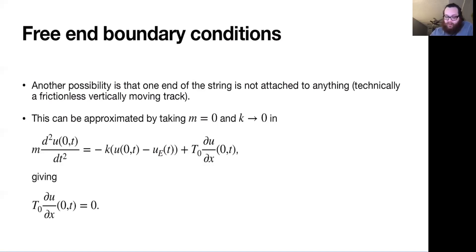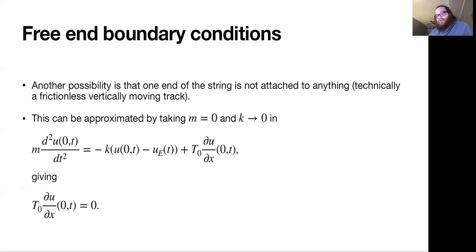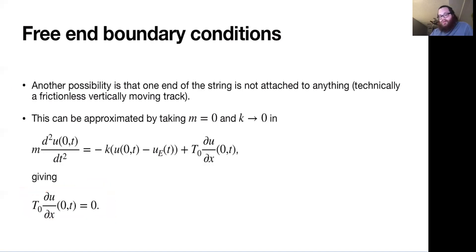So our approximation for a free end of the string gives us the corresponding boundary condition: the derivative equals zero. That's the same boundary condition we had for the heat equation with perfectly insulated ends. It turns out this condition — that the derivative is zero — also comes up in the wave equation, but it describes something slightly different.